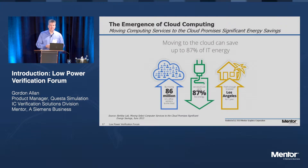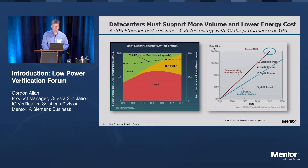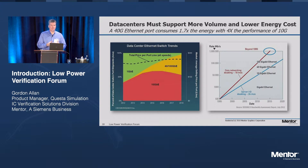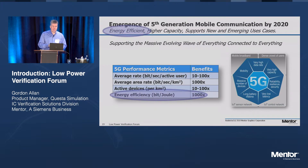Of course, moving resources to the cloud is one solution — it can save up to 87% of IT energy for a typical enterprise. We are engaged with many customers doing just that with their EDA environments. The technologies underpinning some of these power reductions include, for example, 40G Ethernet, which consumes only 1.7x the energy of 10G Ethernet but delivers 4x the performance. And similarly, on the cellular side, 5G solutions are highly energy efficient compared to what's gone before.